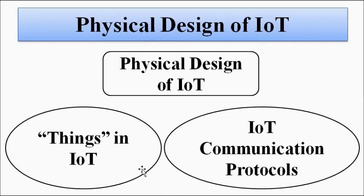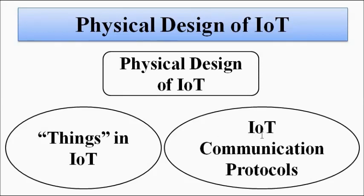The physical design of IoT involves two things. First are the 'things' in IoT — the devices, appliances, and machinery which are powered by electrical means and connected to the internet. Second is the communication protocols, which are certain rules, regulations, or standards that define how communication or data exchange will take place between the various devices and how connections will be made.